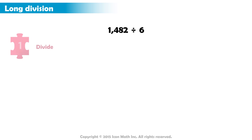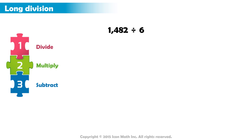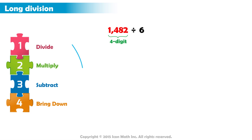First, we divide. Next, we multiply. Then we subtract. And finally, we bring down the next digit from our dividend. Since we have a four-digit dividend, we will perform the four steps of DMSB four times.